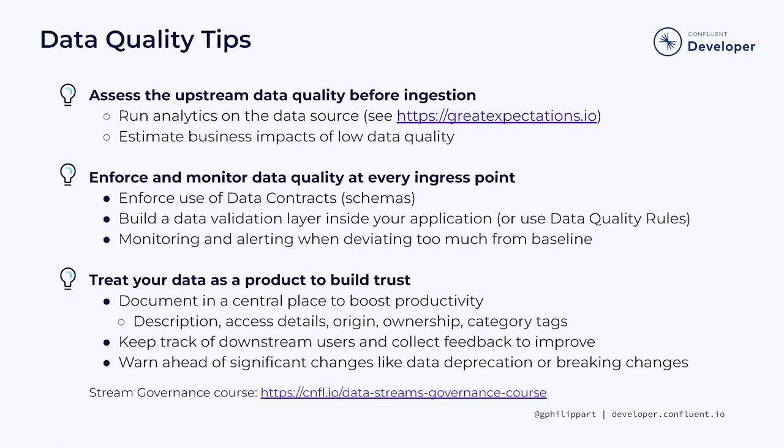Our third data quality advice is to start treating your data as a product to build trust — considering data as a precious resource that requires meticulous management at every stage of its existence. Document your datasets in a centralized location with a description, who owns it, how to access it, and where it originates from. Add a few tags to the mix like 'contains PII', 'marketing', or 'sales' to boost discovery and productivity. All of this will make the lives of developers and data analysts much easier when they need to use your data.